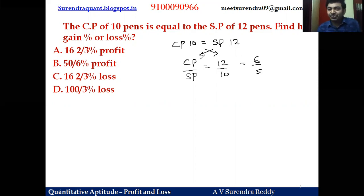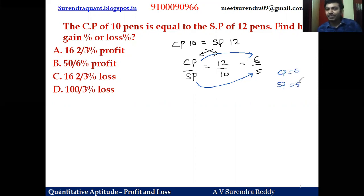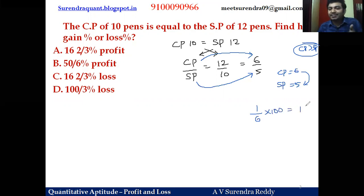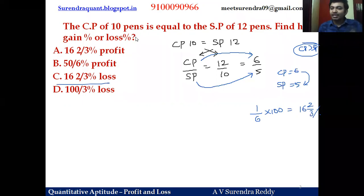What does this ratio mean? For every 6 rupees of cost price, the selling price is 5 rupees. So let CP = 6 rupees and SP = 5 rupees. When CP is more than SP, that is a loss case — there is 1 rupee loss on a cost price of 6 rupees. To convert to percent: 1 by 6 equals 16⅔ percent loss.